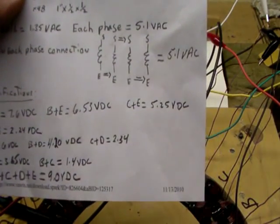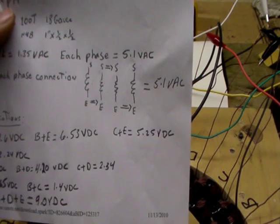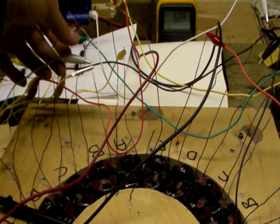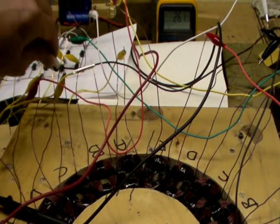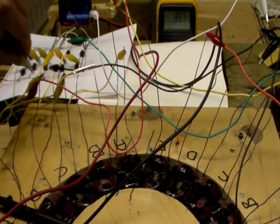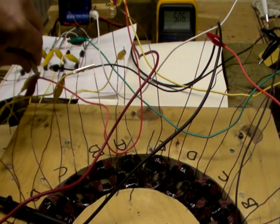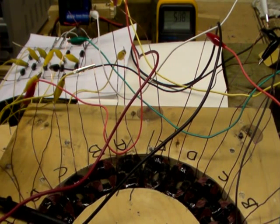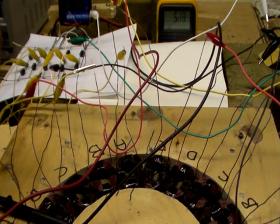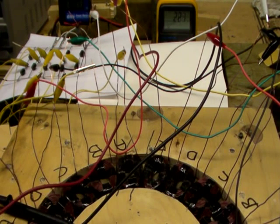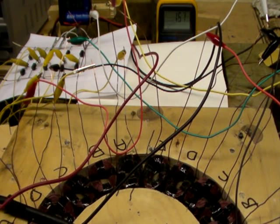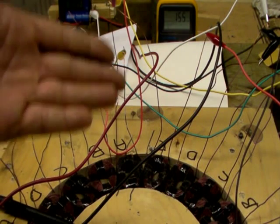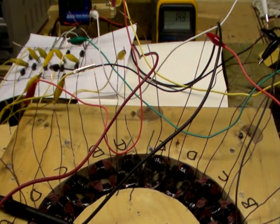So each phase will give me 5.1 AC. So let's check this one out. That's 5.1. That's another phase. That's another phase. Almost another phase. So all five phases are giving me 5.1. So the coils are connected correctly. Everything seems to be making sense because all phases separately are giving me the same AC voltage.